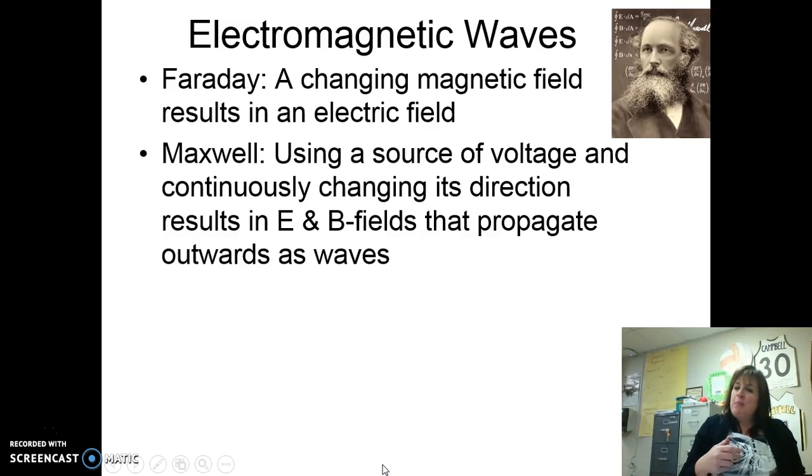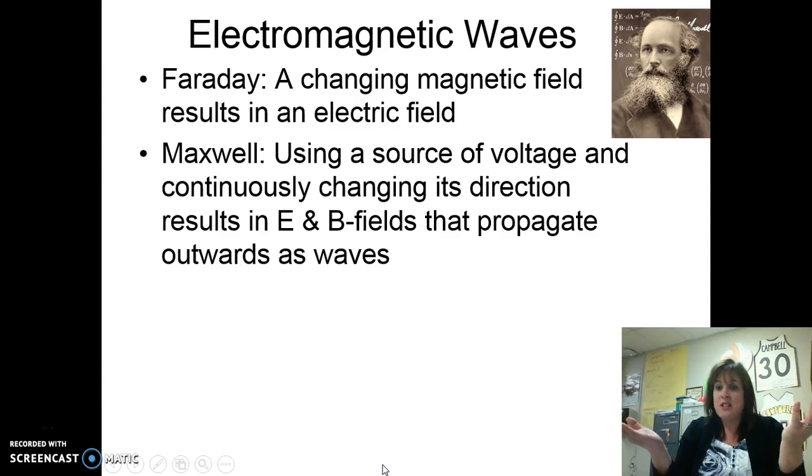Well in our last unit on magnetism, remember we talked about how Faraday discovered that a changing magnetic field, or changing flux, resulted in an electric field which generates voltage. Electric fields related to voltage, and then I could get current.